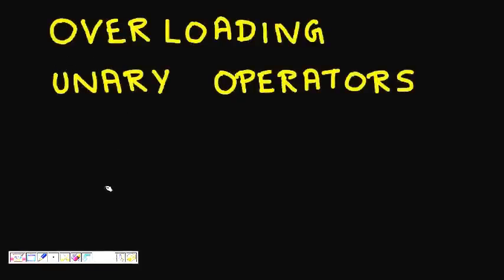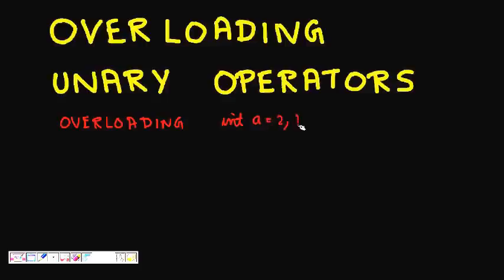Today we are going to learn about overloading unary operators in C++. First, let's understand what overloading means in C++ in terms of operators. If I have int a equal to 2, b equal to 3, and c, then I can easily say c is equal to a plus b, or c is equal to a into b. These are the data types and I can do some operations on them.